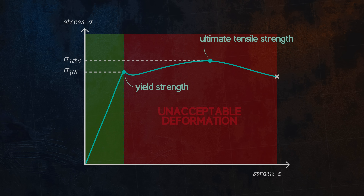It is possible for failure to occur at stress levels well below the yield strength if the applied load varies with time. This failure mode is called fatigue, and I will cover it in a separate video.